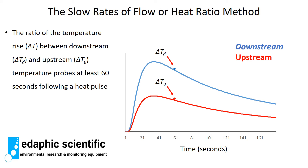With the slow rates of flow or heat ratio method, we are interested in measuring the ratio of the downstream to the upstream temperature 60 seconds following a heat pulse. Going back to the conduction and convection graph, 60 seconds after the heat pulse we take a measurement and calculate the ratio of the downstream to upstream probes, then put that into the heat ratio method equation.